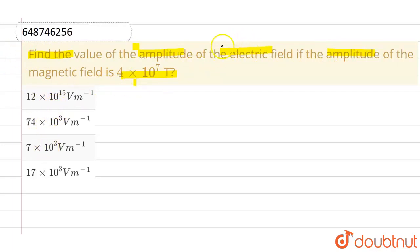Now, let us assume that amplitude of electric field is denoted by E₀ and amplitude of magnetic field is denoted by B₀. So in this question, B₀ is given as 4×10⁷ Tesla.